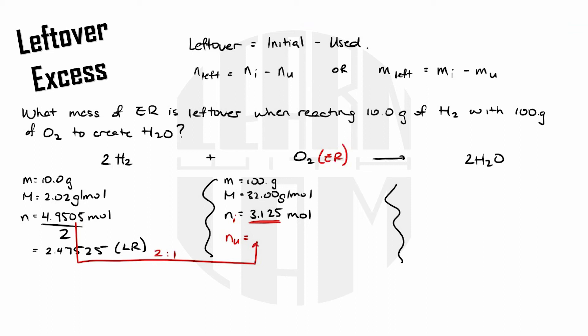There's a two to one ratio between hydrogen and oxygen so that means my reaction used 2.47527 moles of oxygen. From there I know that moles left over equals moles initial minus moles used so 3.125 moles minus 2.47525 moles gives me 0.64925 moles left over.